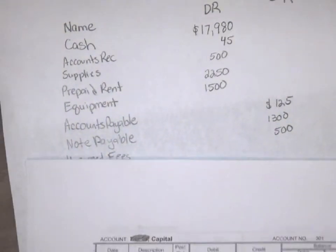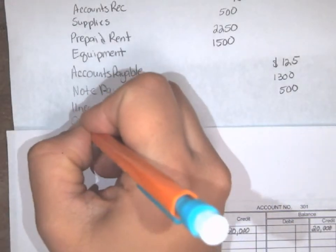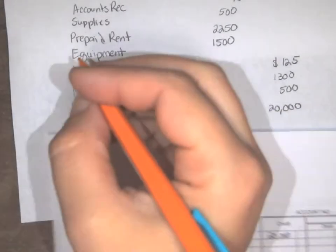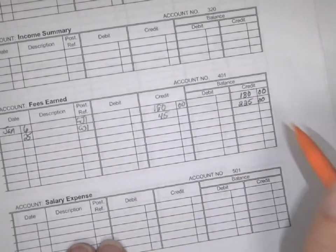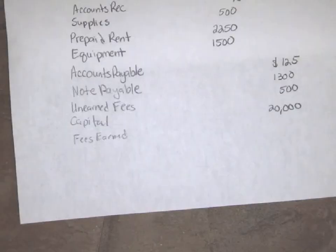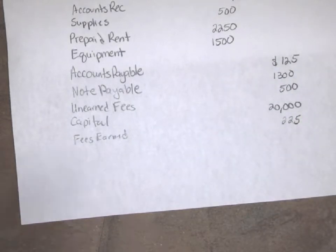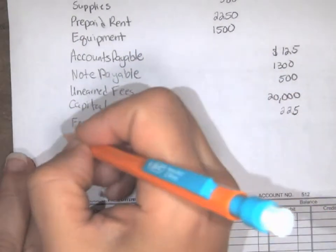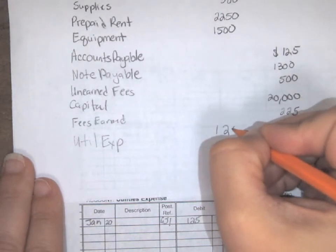The next amount is our capital account, which is a credit of $20,000, so we write capital and enter a credit of $20,000. The next one is fees earned, a credit of $225, so we list that down. And the last account is the utility expense account, which has a debit balance of $125, so we put utility expense in the debit column for $125.